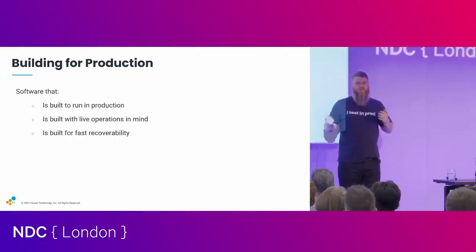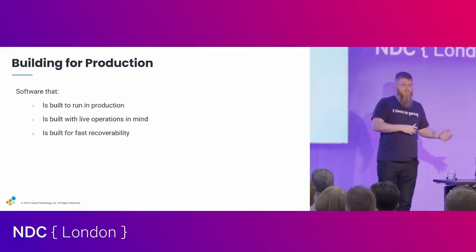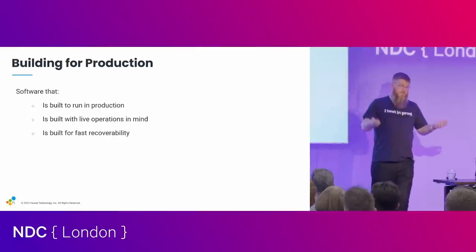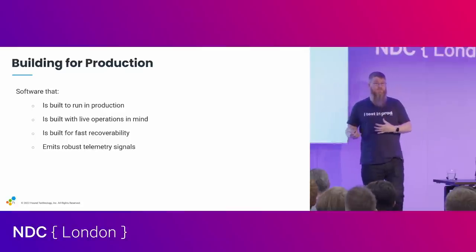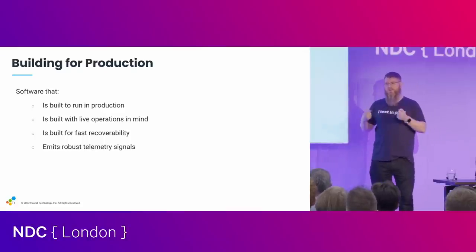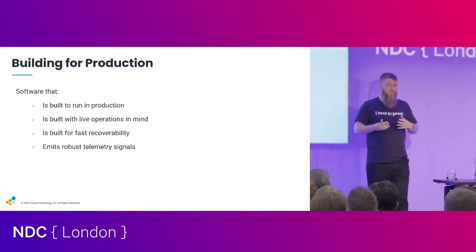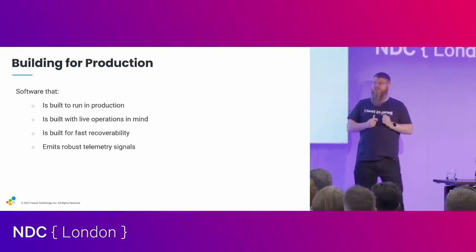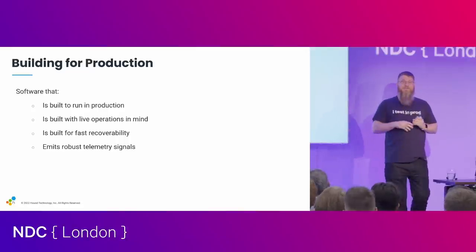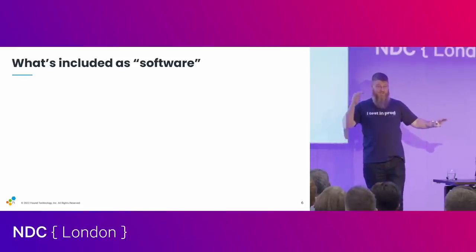The other thing is built for fast recoverability. There are things called the DORA metrics, which Google built on the DevOps reports, which mentions something called MTTR — the idea of how do I build things that recover fast from failures. All of that leads to the idea that my application needs to emit robust telemetry signals, whether that's metrics, traces, or logs. In production, you can't attach a debugger. Whenever you attach a debugger to a live running process, it stops all the threads — every request just halts. It's not a pleasant day.